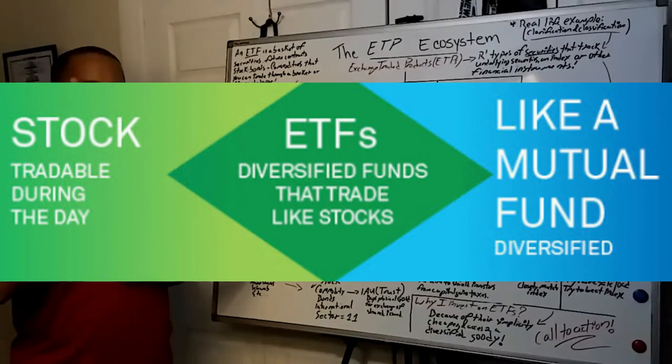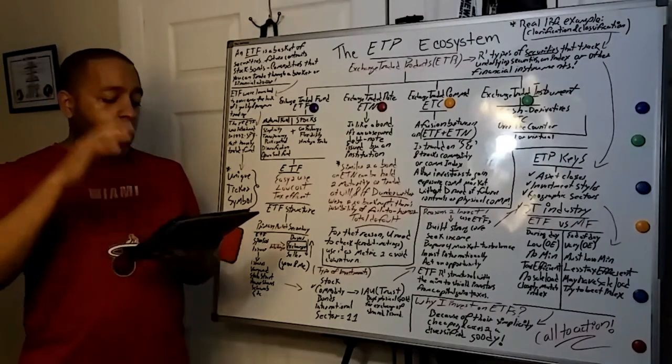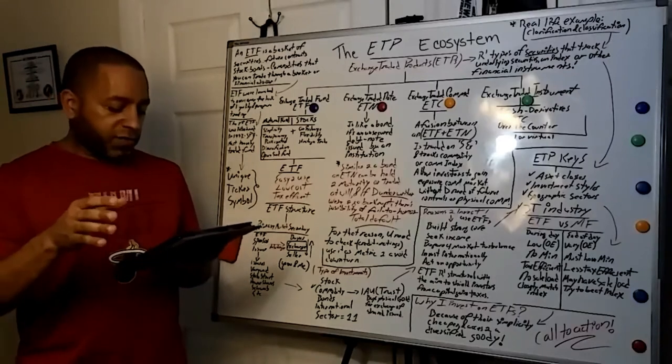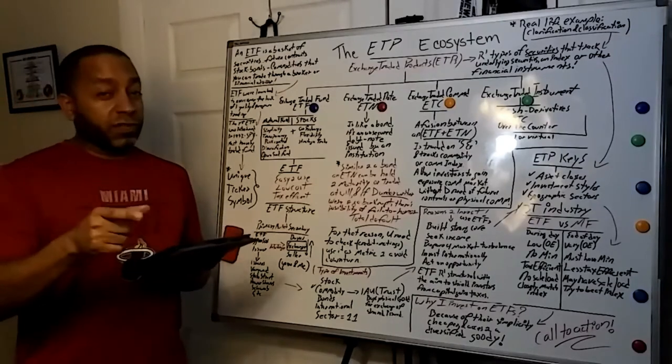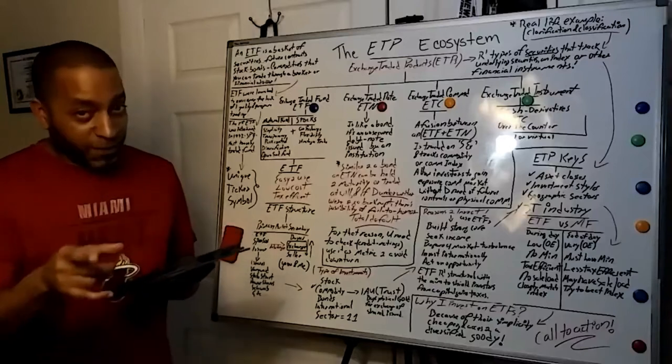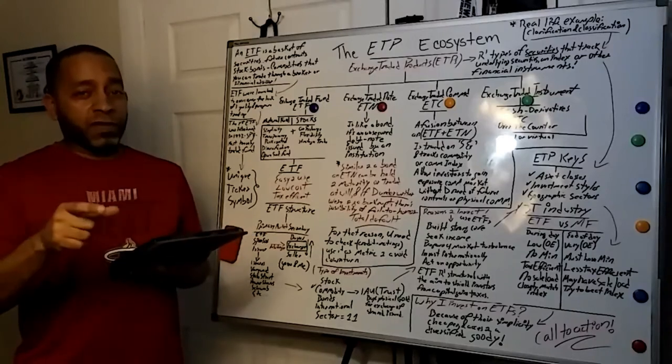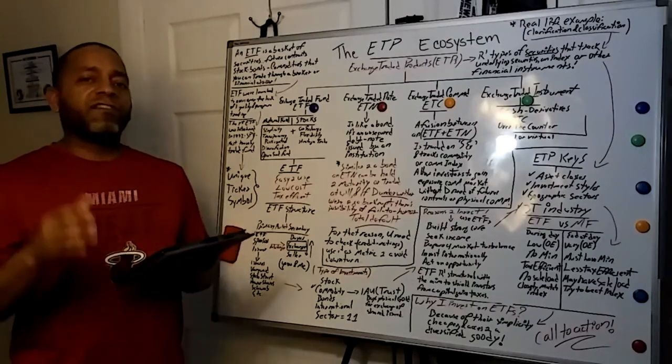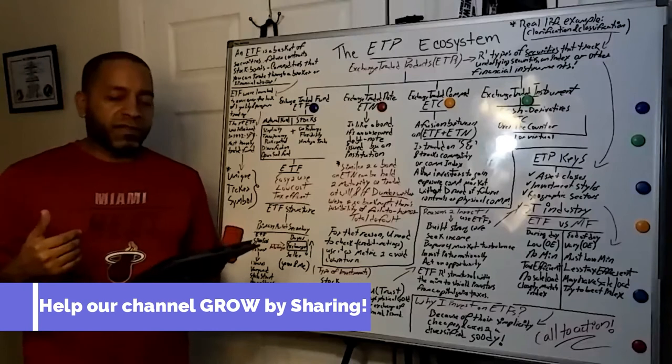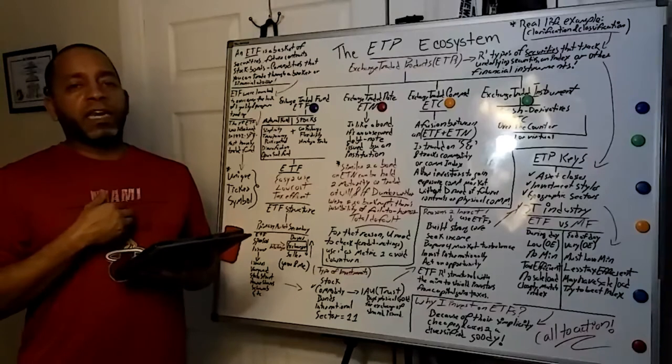So, this is a quote unquote shield. It's a shield, but the shield can only last so long. So, keep in mind, again, reason to invest: build strong core, seek income, prepare for market turbulence, invest internationally, act on opportunity. And again, going back to here, tax efficiency. Good to go. So, on this section, you're going to be moving up here. ETP keys, exchange traded products keys. Right there. This applies to ETI, ETC, ETN, and ETF. First one, asset classes. Second, investment styles. And third one, geographic sectors. And guys, this sector, as far as the ETF, this is a trillion dollar industry. This is moving huge numbers. Also, keep that in mind. That's an incentive for you. A trillion dollar industry.